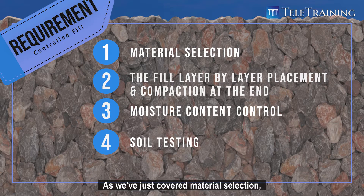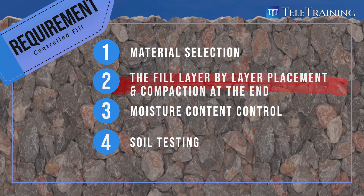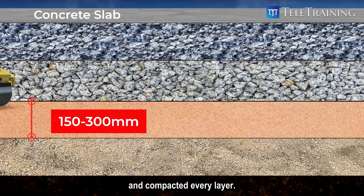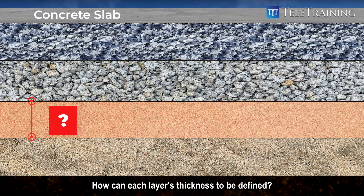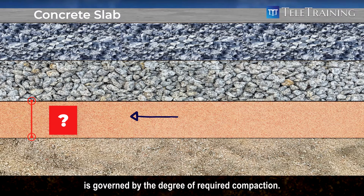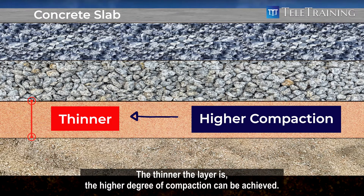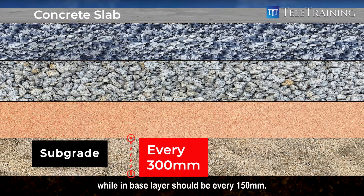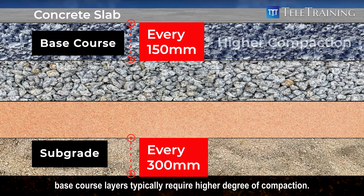Now let's see how the material is to be placed layer by layer. Fill will usually need to be placed in layers of 150 to 300 mm and compacted every layer. Generally, the thickness of each layer is governed by the degree of required compaction — the thinner the layer, the higher the degree of compaction that can be achieved. For example, subgrade layers should be placed and compacted every 300 mm, while base layers should be every 150 mm, as base course layers typically require a higher degree of compaction.